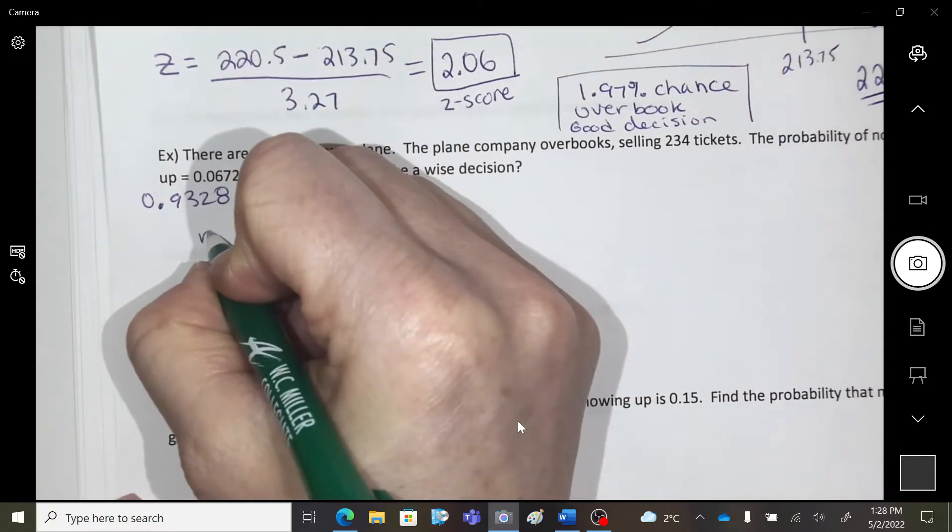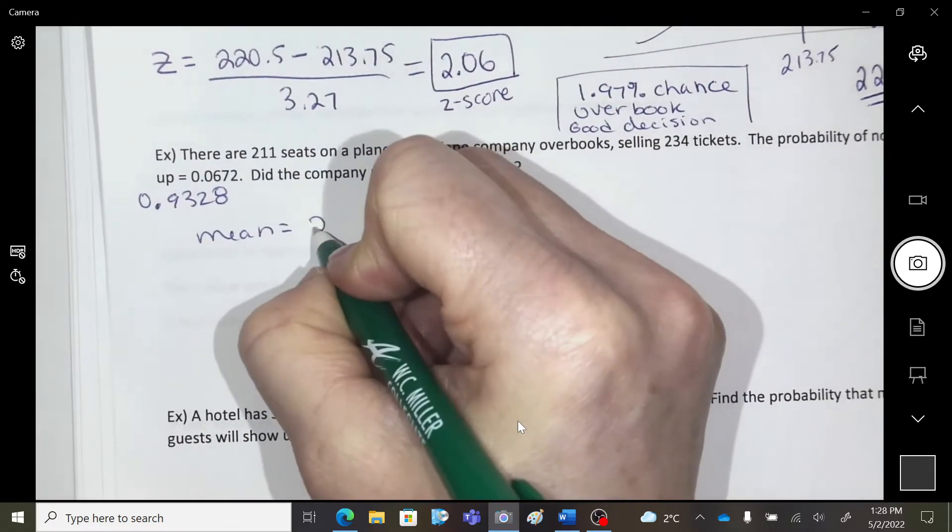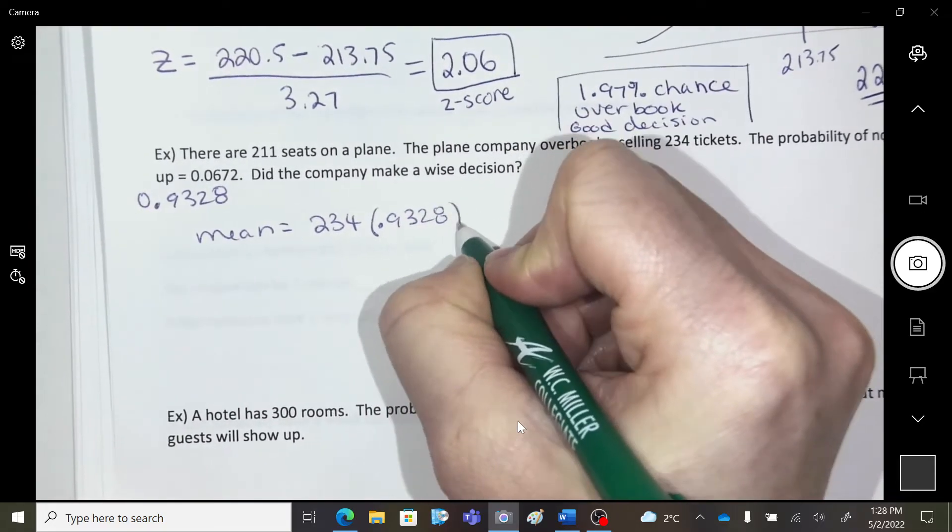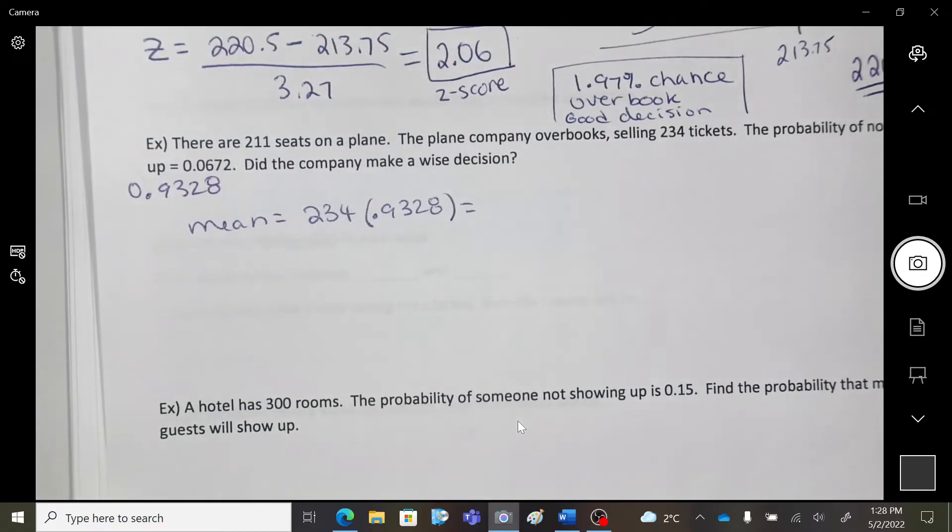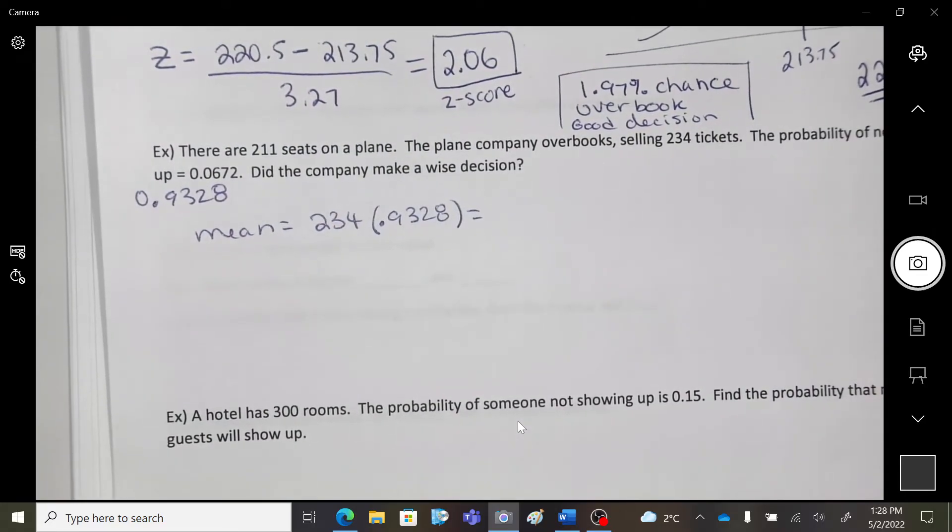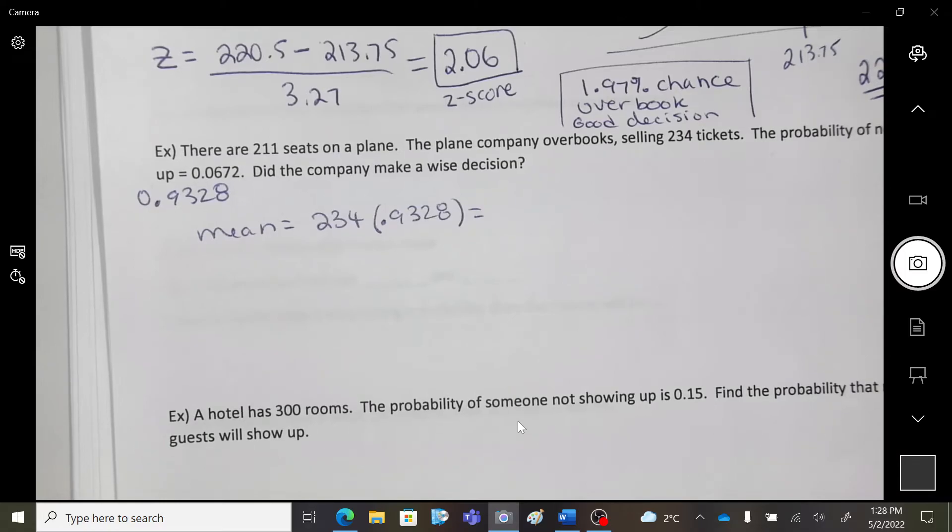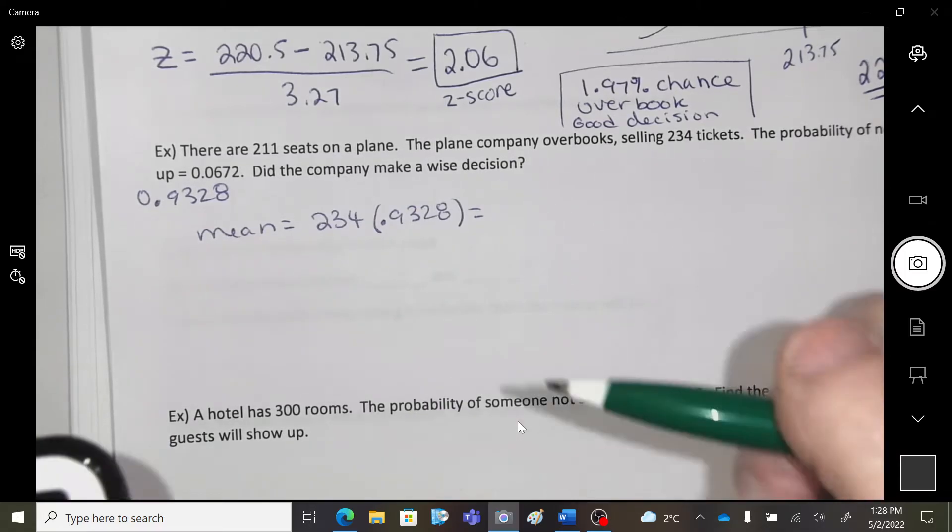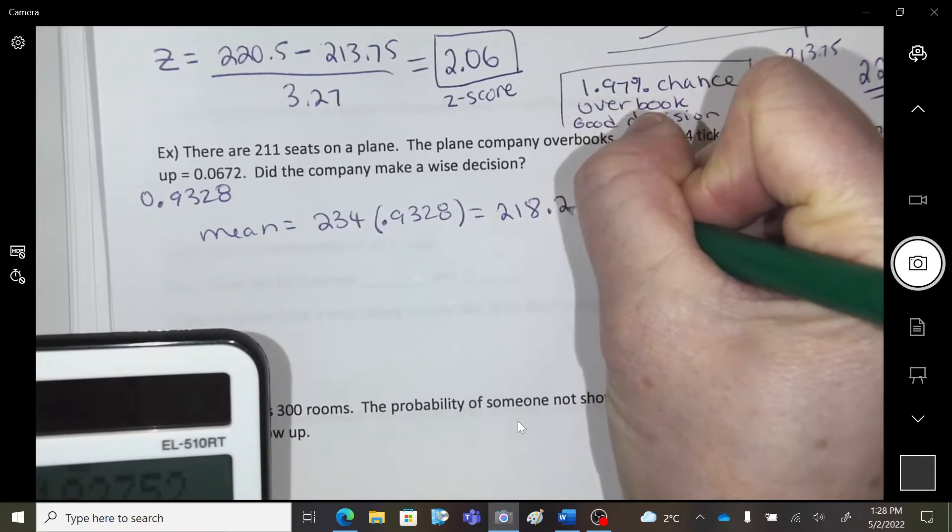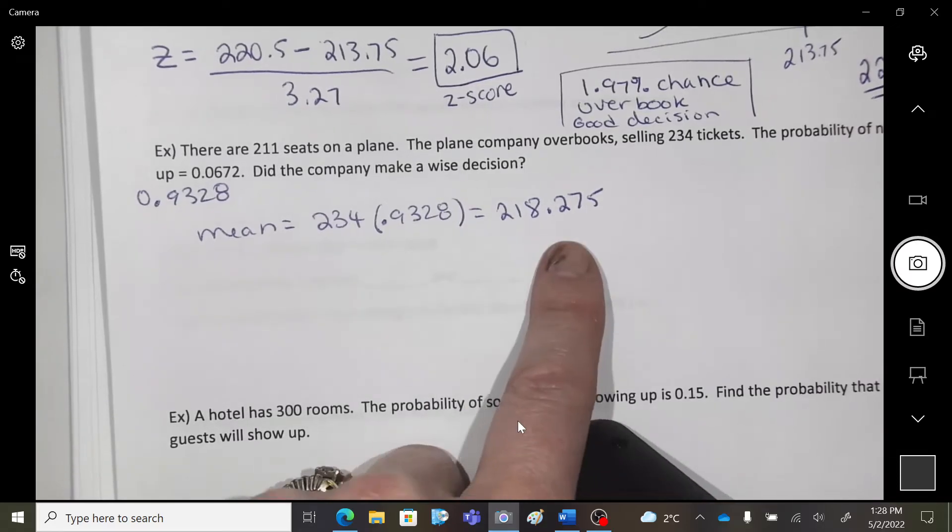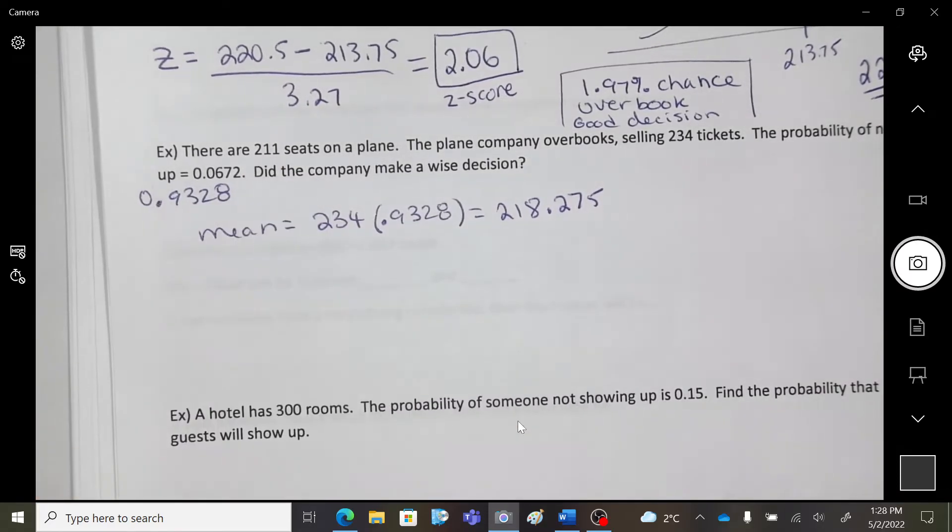Okay. Same idea here, so we're going to go with the mean. We're selling 234 tickets, and we're expecting 93.28% of people to come. Okay, that's how many tickets we're selling. We're expecting that percentage of people to come. Okay, so that's what I'm expecting. Ooh, this is already a bad decision, but if I'm expecting that, and there's only that many seats, I can already tell. This is not good.